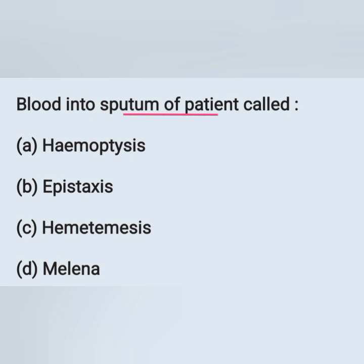Next question: blood in the sputum of a patient is called? Options: A) hemoptysis, B) epistaxis, C) hematemesis, D) melena. As discussed in the previous question, blood in the sputum is known as hemoptysis. Option A is the correct answer.